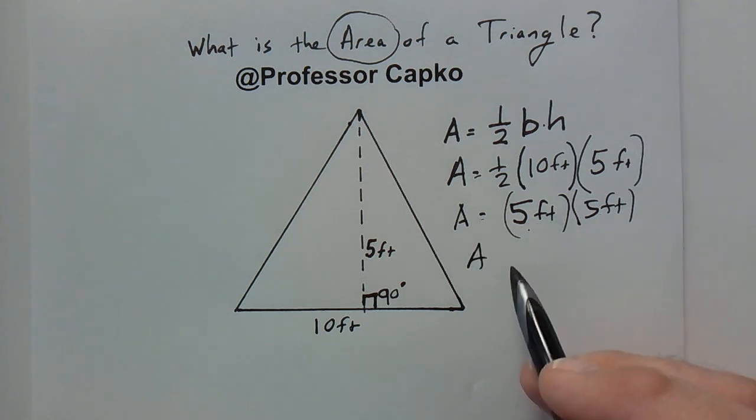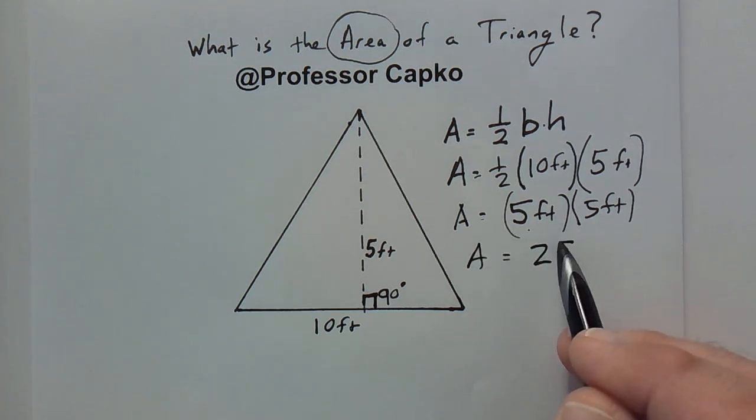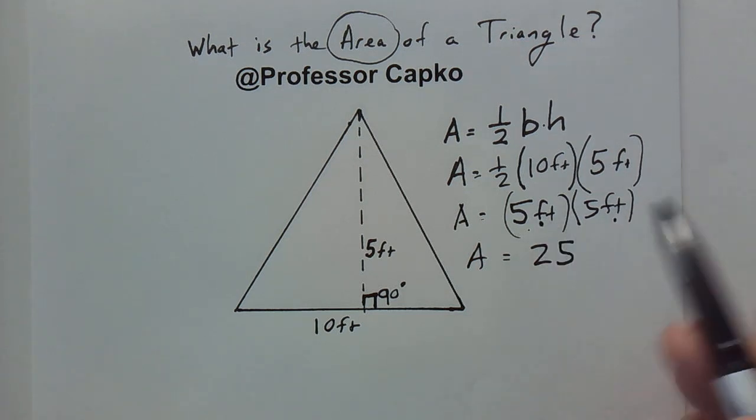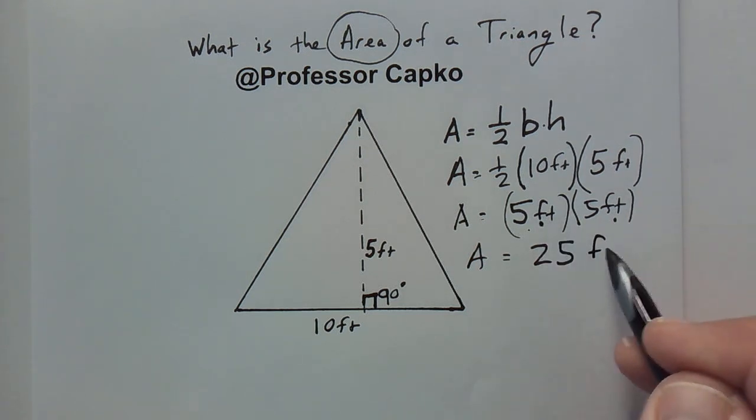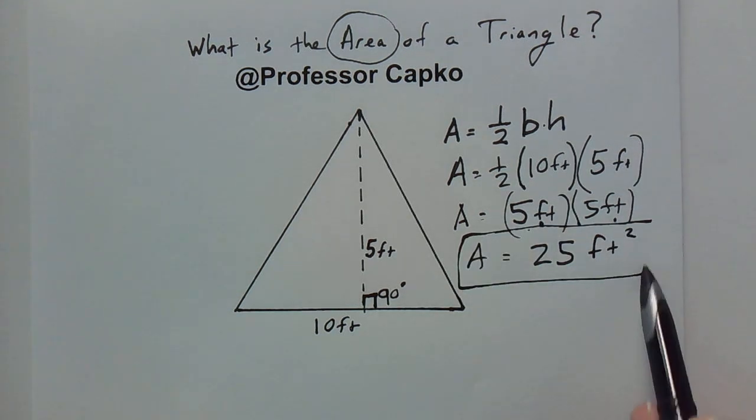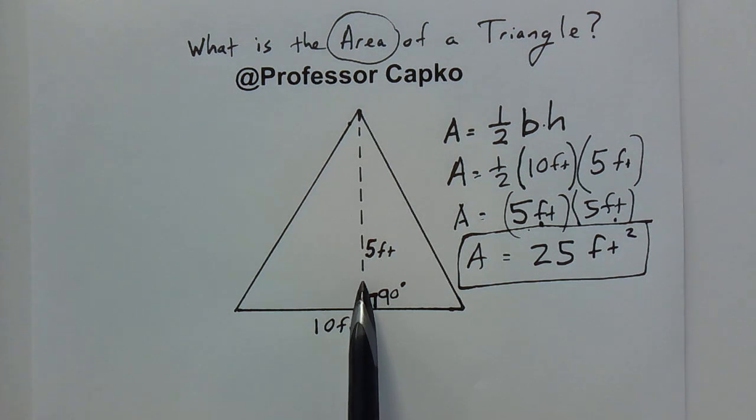So 5 times 5 is 25, and don't forget we have feet times feet. That would be feet squared. Area is going to be in square units. So the area of this triangle here for this example is 25 square feet.